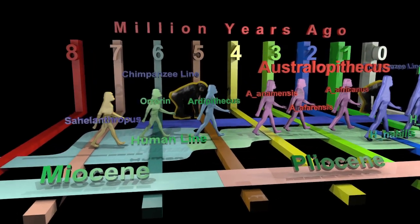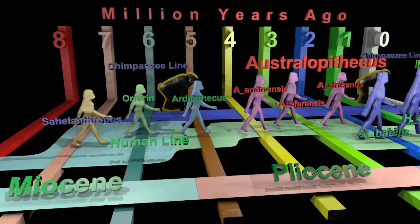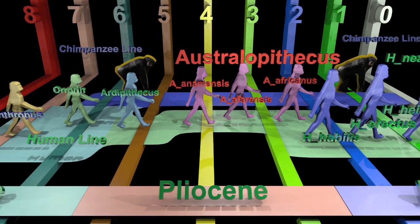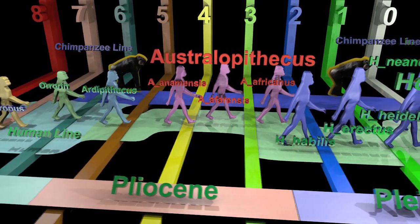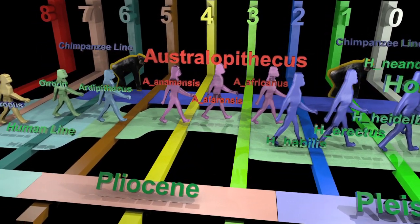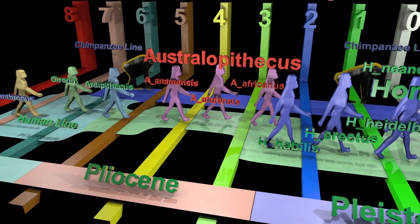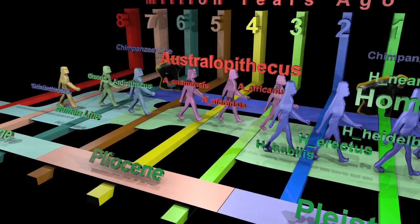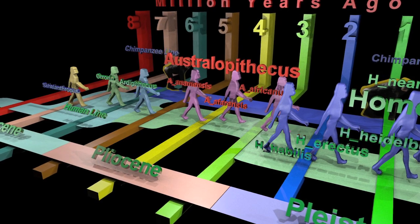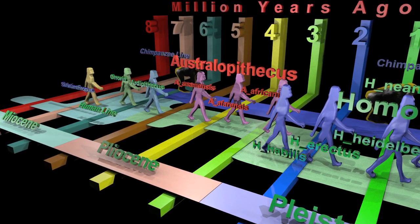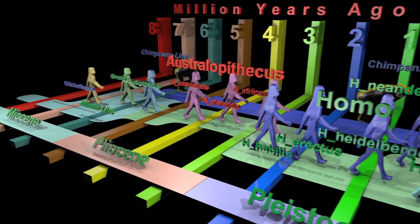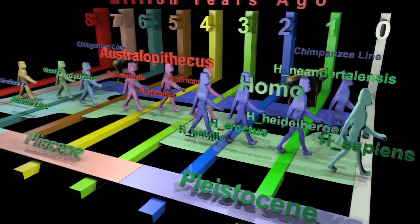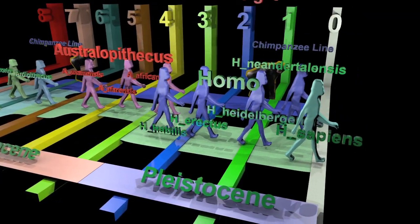In the past chapters we have looked at Sahelanthropus, Orrorin, and Ardipithecus, bringing us up to about four and a half million years in the past. Australopithecus will take us from around the four million year mark to the two million year mark. Starting around two and a half million years in the past we will begin to encounter our ancestors in the genus Homo. Our own species Homo sapiens will make an appearance around 200,000 years in the past.